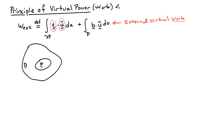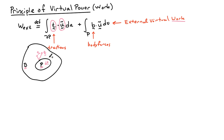So it has the real forces applied to the body — the body forces and the tractions — and this field which we call the virtual velocity field. The T's are the tractions on the surface; there's a surface normal and a traction. We also have the body forces in the body, and those can be conventional body forces or D'Alembert body forces, so they can include the inertial term.